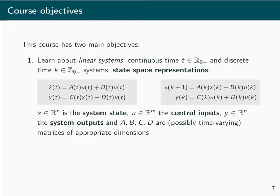The main difference is that for continuous-time systems, the time variable, which is denoted with t, is assumed to be of a continuous nature. Correspondingly, the state-update equation contains a time derivative of the state vector x, which is denoted with x-dot.